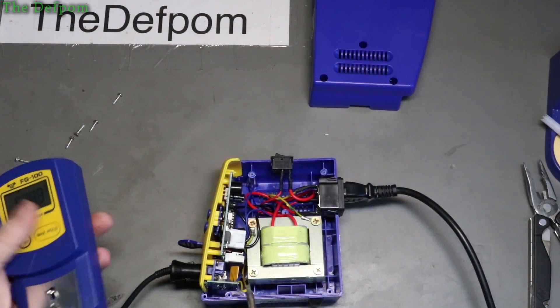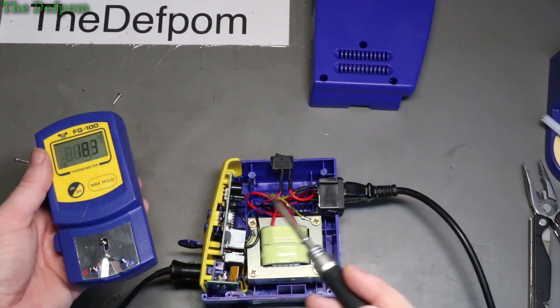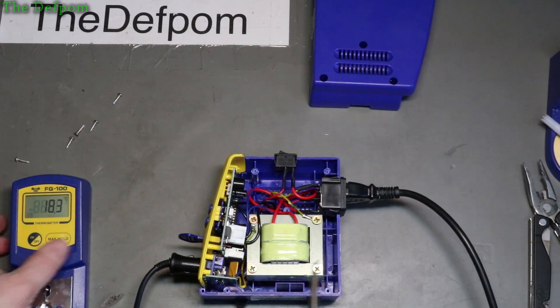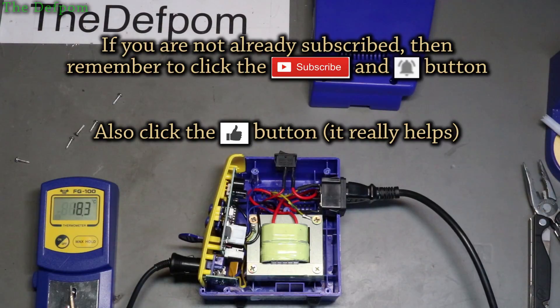Alright, so something I showed you the other day was the way that this particular tip on my iron, my fake HECO 951 here, was out by quite a bit.